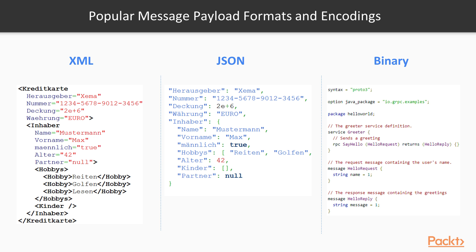Finally, let's look at some popular message payload formats and encodings — the primary ones being XML, JSON, and binary. XML is quite verbose and used to be popular with SOAP web services, but nowadays it's hardly used. JSON is popular right now — it's more lightweight and easier to process, especially in a web environment. Binary is very efficient: if JSON is too verbose, you can use binary representations, which is useful in IoT environments where device constraints mean message payload size really matters.